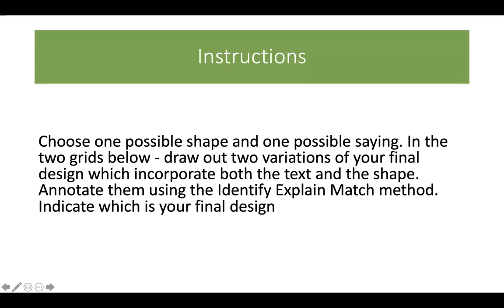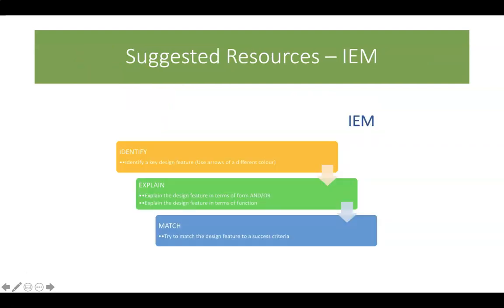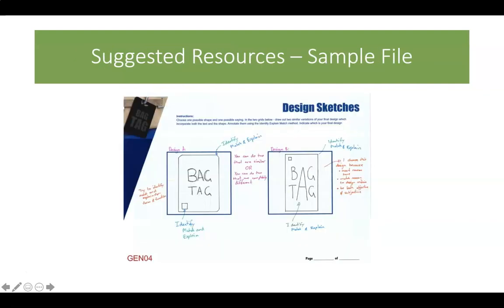We're going to annotate this using the identify, explain, and match method. The design sketches document we're going to be using is GEN04. There are two grids provided, and when we're finished it should look like this.